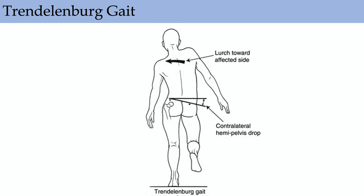For patients with decreased offset or abductor insufficiency, they can get a Trendelenburg gait where the pelvis dips to the opposite side while walking. For example, with a Trendelenburg sign on the left, you'll see the pelvis dip to the right side because the left-sided abductors cannot level the pelvis during single leg stance.